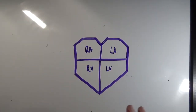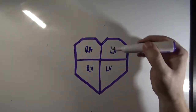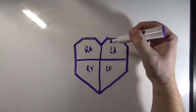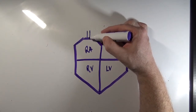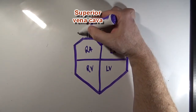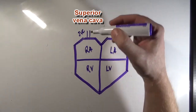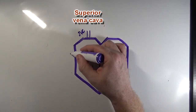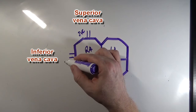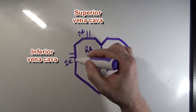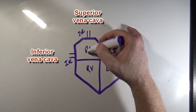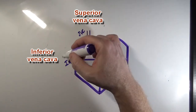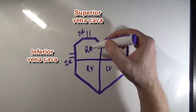Now I'm going to draw the blood vessels that are going to bring blood to the right atrium. We're going to have one up here which is going to be the superior vena cava, and then the inferior vena cava over here. Deoxygenated blood is going to come to the right atrium from the upper body and the lower body through these two blood vessels.